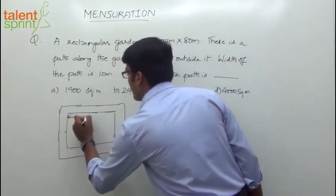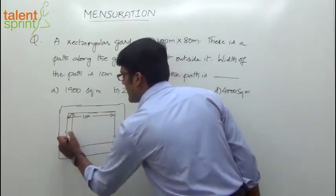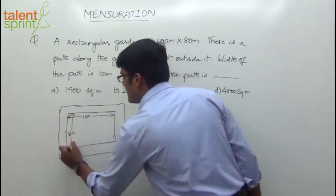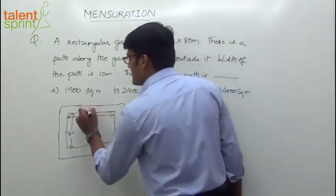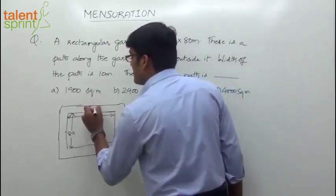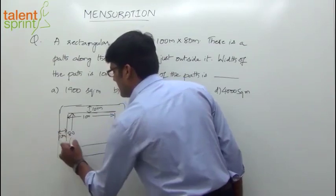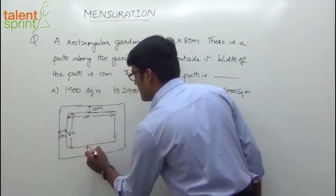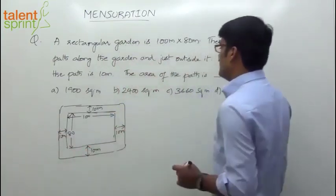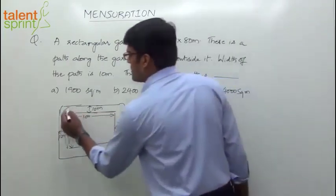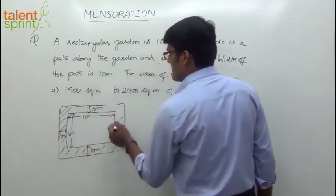So this is 100 meters — the length of the garden is 100 meters, its breadth is 80 meters. And then there is a path outside it, and the width of this path is 10 meters. All along the sides it is 10 meters. We have to measure the area of the path — the shaded region here.